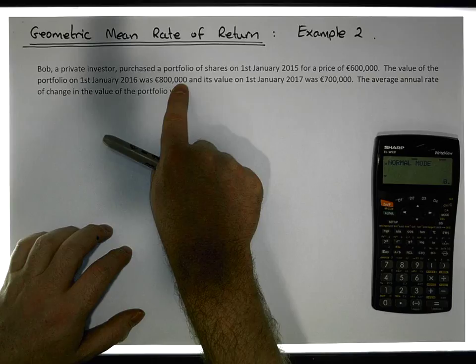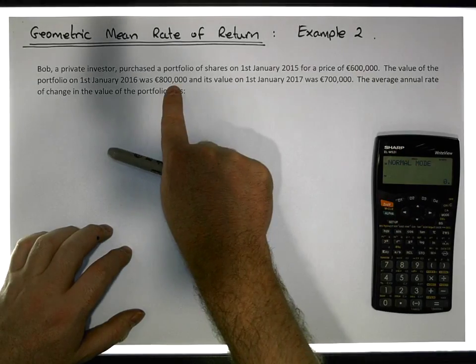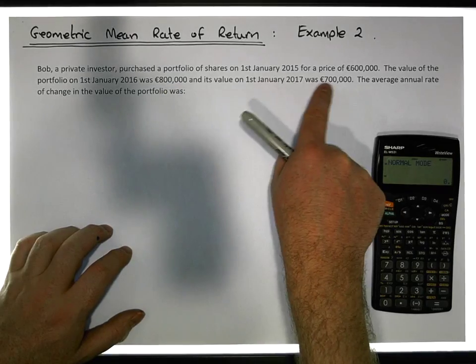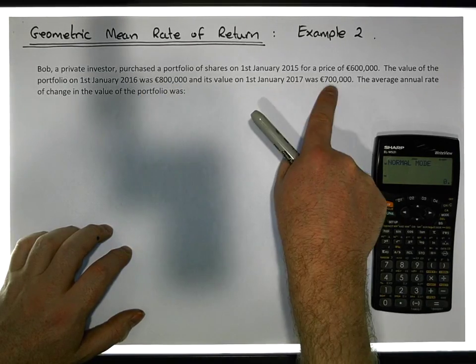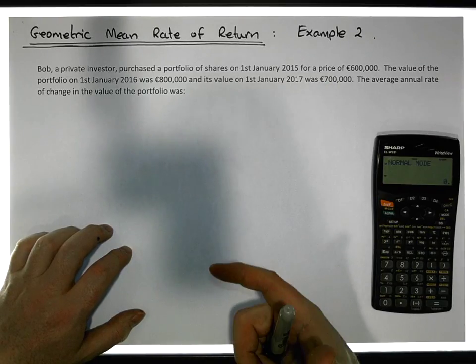Over the next couple of years the value of the portfolio changed. On the 1st of January 2016, the value of the portfolio was 800,000 euros, so there was an increase in the value of the portfolio. Then on the 1st of January 2017, with respect to the January before, there was a decrease to 700,000.